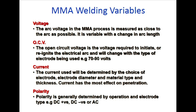Current in MMA welding is determined by the choice of electrode diameter, material type, and thickness. If the material thickness is more, you need more current. Current has the most effect on penetration.